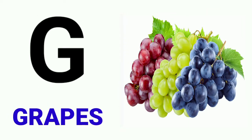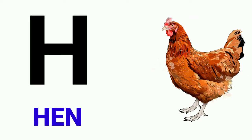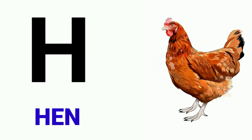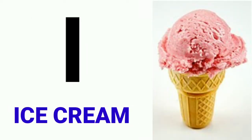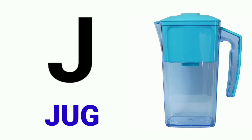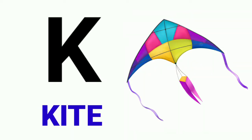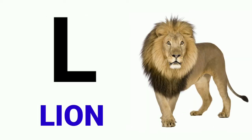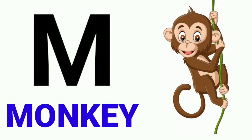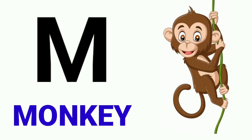G for crabs, H for hen, I for ice cream, J for jug, K for kite, L for loin.